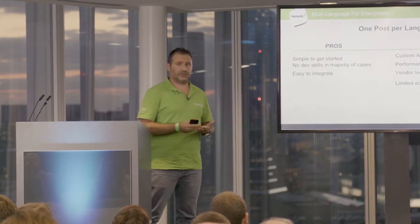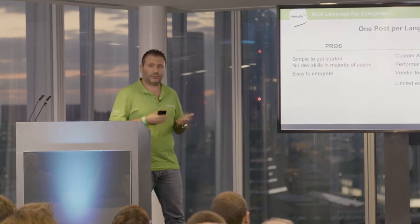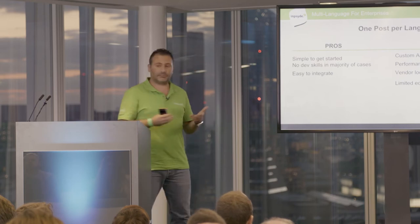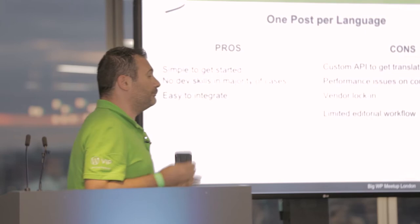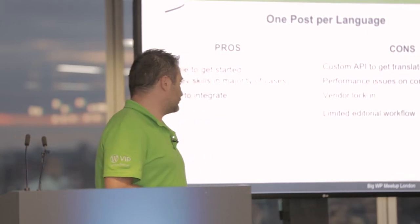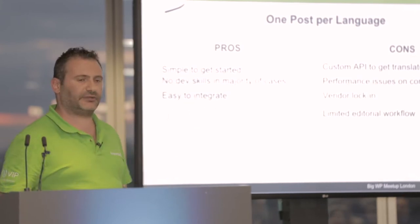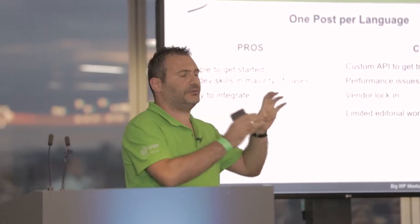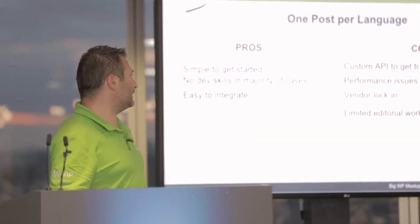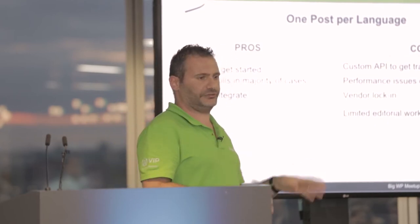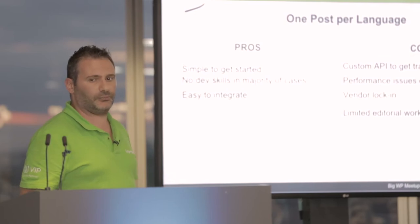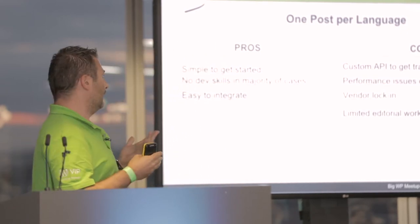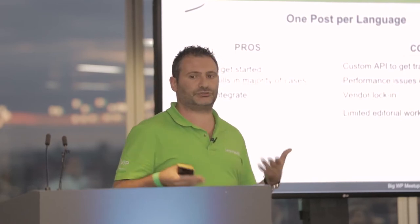But still, we have problems. We have to use a custom API to get translations, because we can't use standard WordPress functionality — the posts are connected via custom tables. There are also big performance issues: when querying posts in a specific category, the plugin has to intercept and modify every query to filter by language. This means every single query on the website is affected, which is a major performance problem and doesn't play well with cache — making it unsuitable for high-traffic sites.